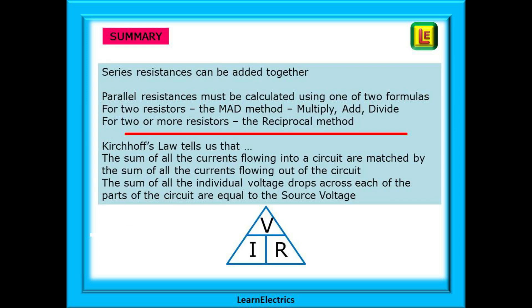Just a little summary on this part. Series resistances can be added together. Parallel resistances must be calculated using one of two formulas. For two resistors we use the MAD method—in other words, we multiply, add, and divide. For two or more resistors, use the reciprocal method. Kirchhoff's law tells us that the sum of all the currents flowing into a circuit are matched by the sum of all the currents flowing out of the circuit. And the sum of all the individual voltage drops across each of the parts of the circuit are equal to the source voltage.